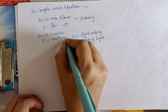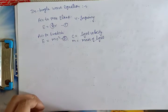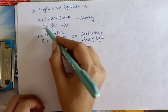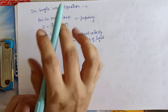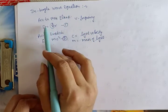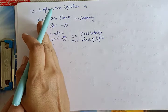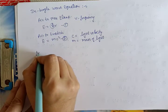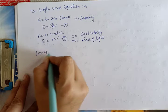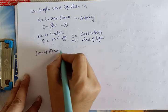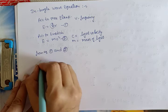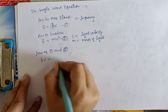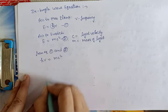De-Broglie نے ان دو equations کا use کیا۔ یہ دونوں energy جو ہے وہ ایک ہی radiations کی energy ہے اسی لیے from equation 1 and 2, h nu یہ equal to ہوگا mc square کے